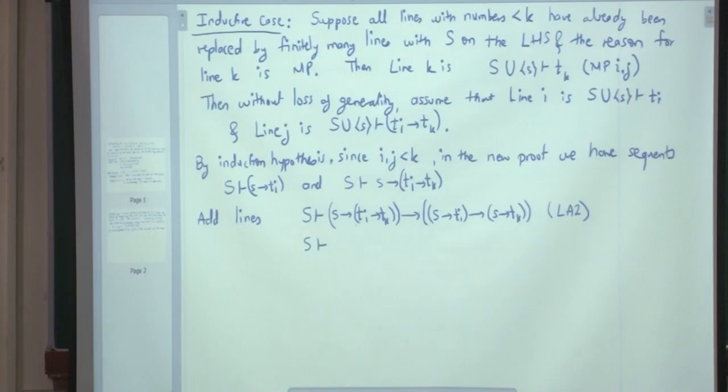Yes, so the first part of the implication is precisely given. So, then S implies T_I implies S implies T_K. The reason is MP on the previous two lines and then again, once again I can use MP because S implies T_I, we already have a proof over here. So, therefore, sorry, little s implies T_K by using reason MP.